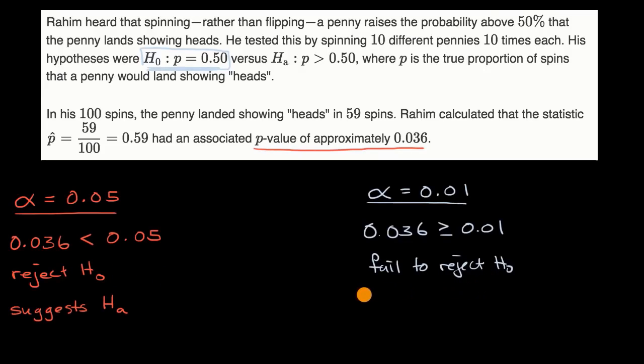In future videos, we'll start thinking about the question of, okay, if I'm doing it ahead of time, if I'm setting my significance level ahead of time, how do I decide to set the threshold? When should it be one hundredth? When should it be five hundredths? When should it be ten hundredths? Or when should it be something else?